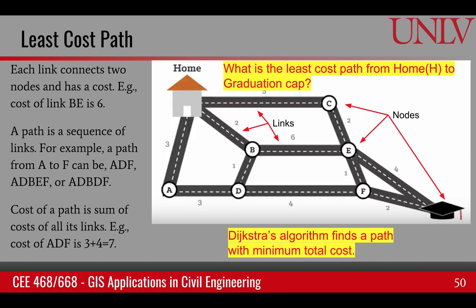What does least cost path mean? It means: what is the shortest distance between two nodes? Each link has a cost. For example, the link BE will cost us six units to go from B to E. A path is a combination of links. If I'm trying to go from A to F, I can take path ADF or path ADBEF, and each path will have a total cost which is the sum of the cost of each link. Going from A to D to F costs 7, whereas going A to D to B to E to F costs 3 plus 1 plus 6 plus 1, which is 11. The least cost path algorithm finds the smallest cost path from a source to a destination.